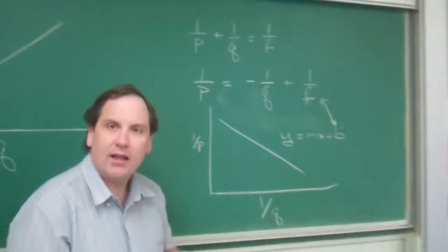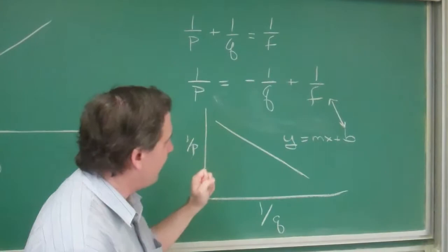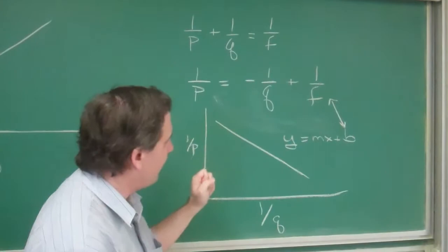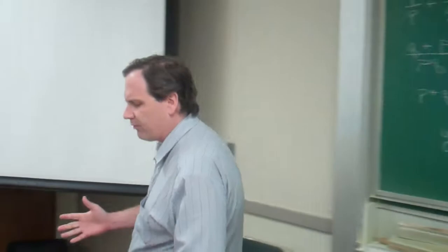Another way we can do it is we can plot 1 over P and 1 over Q on the X-axis now, and now we reorganize it, we take the 1 over Q over, we get 1 over P equals minus 1 over Q plus 1 over F. From this, also saying Y equals MX plus B, we see that the slope is going to be negative 1 approximately, X is 1 over Q, Y is 1 over P, and B, our intercept, is 1 over F.